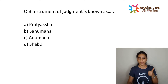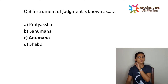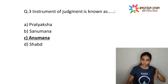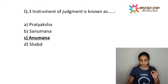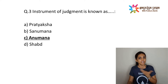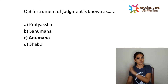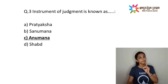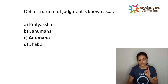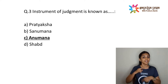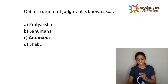Next question: instrument of judgment is known as — options are Pratyaksha, Sanumana, Anumana, or Shabda. The correct answer is option C, Anumana. Anumana means Anu plus Mana — Anu means to follow and Mana means to know or measure — so Anumana means inference. Inference is possible only about a known object; if you have known that object in the past, only then can you infer about it. Inference always follows Pratyaksha Pramana and can never be the first knowledge. For example, we can infer smoke only if we have seen smoke and fire together in the past.